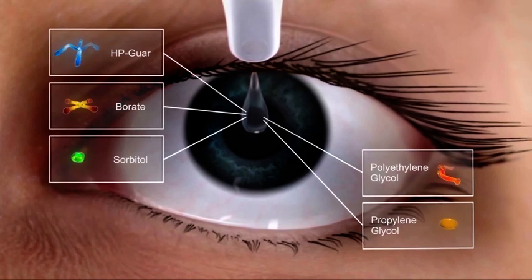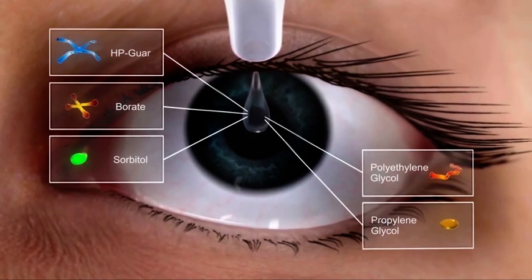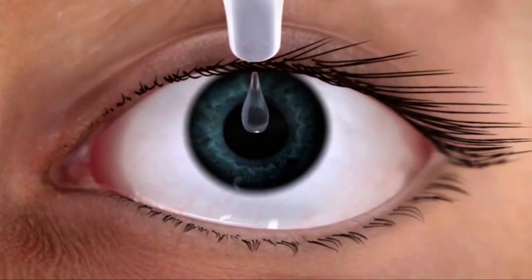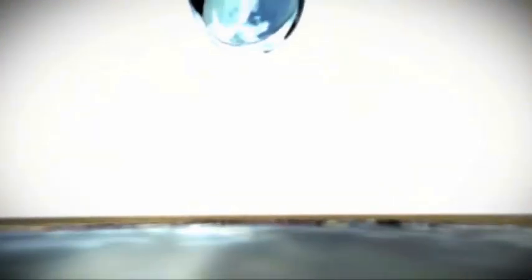As this intelligent delivery system interacts with the tear film, the pH adjusts to the natural pH of the eye, optimizing the viscosity of the solution.